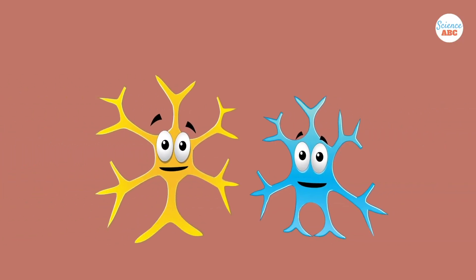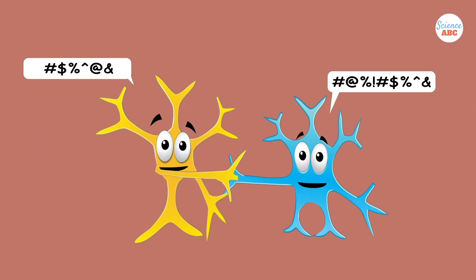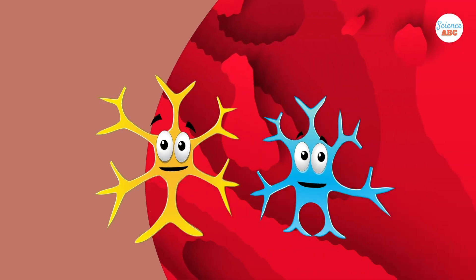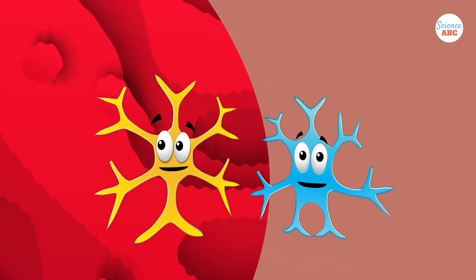Not only this, but glial cells communicate among themselves too. They secrete calcium and other chemicals that trigger other glial cells and even neurons. These seem to cause changes in blood flow to the brain and affect how neurons operate.